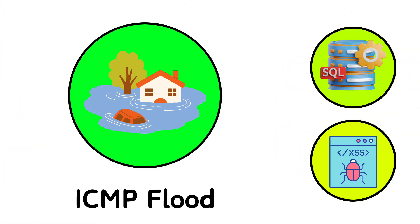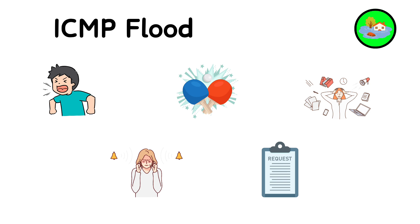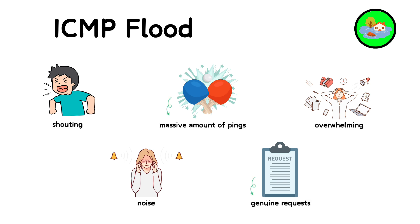10. ICMP Flood. Imagine if everyone in your school started shouting in the hallway at the same time — it would be so loud that you couldn't hear your friend standing next to you. An ICMP flood attack sends a massive amount of pings (echo requests) to a computer, overwhelming it with so much noise that it can't process genuine requests.